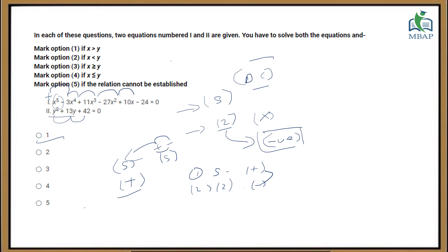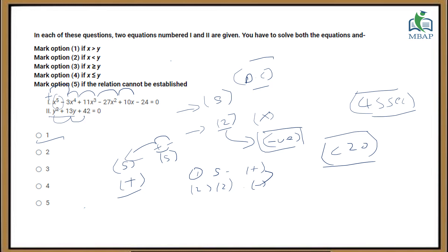In the CET exam you will have around 45 seconds per question. Not all questions can be solved in 45 seconds — some are more difficult and will take more than a minute. But there are more than 60 questions in the CET examination every year which can be solved in less than 20 seconds. All you need is a very clear eye to identify and solve questions that are easy for you.